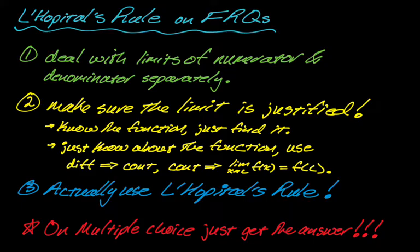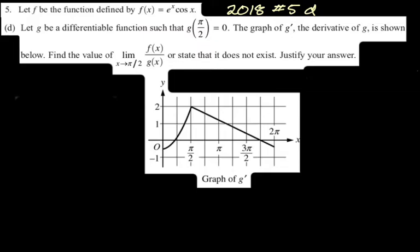Let's take a look. I'm going to go in a slightly unusual order. I'm making this in 2022, so I have 2018, 2019, and 2021 available — 2020 doesn't exist. This first one is 2018 number 5, Part D. I'm only going to do the parts that involve L'Hopital's, and you can find these questions online.